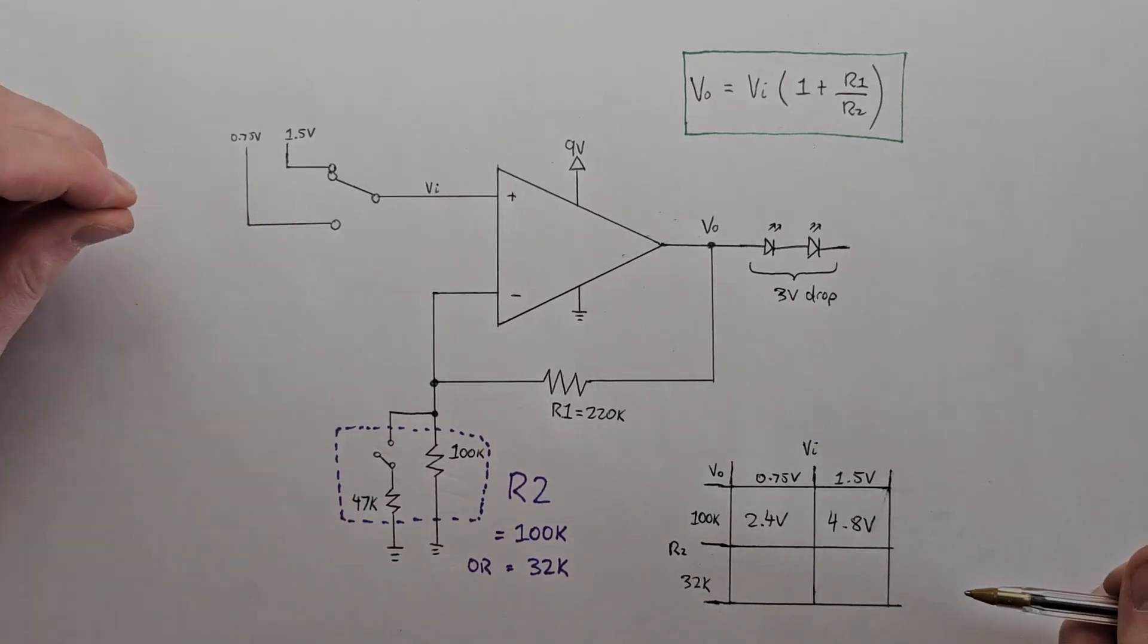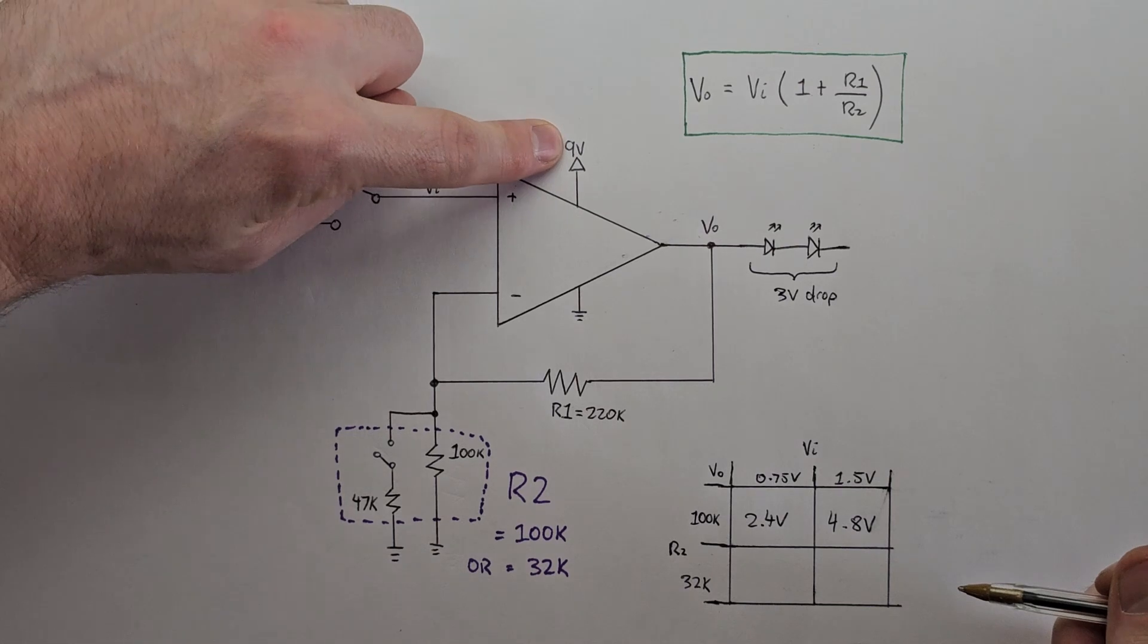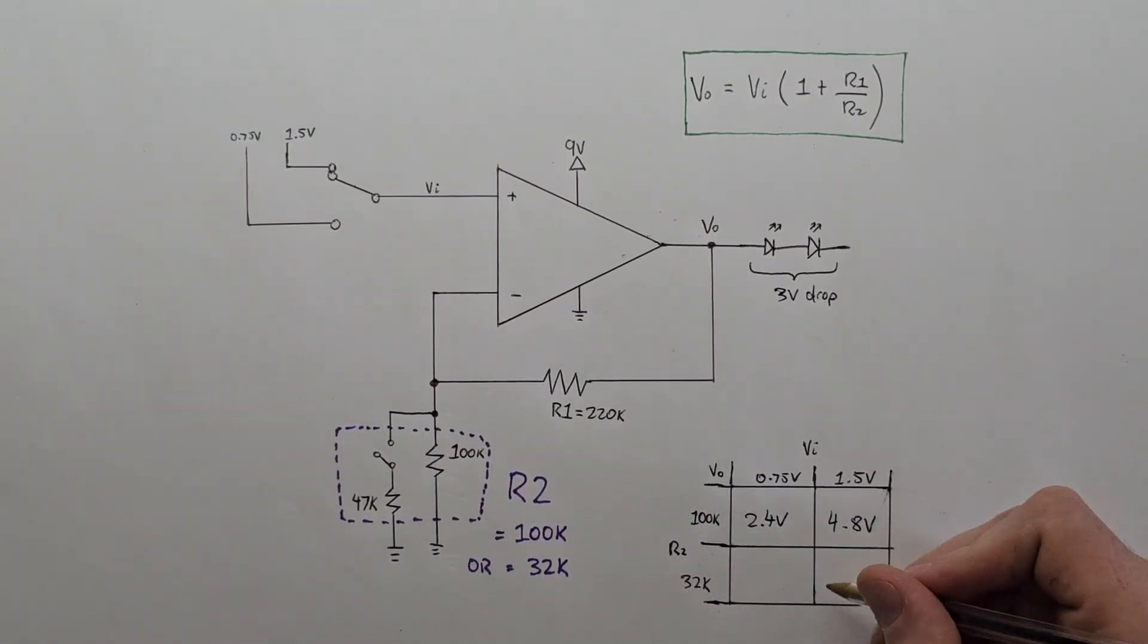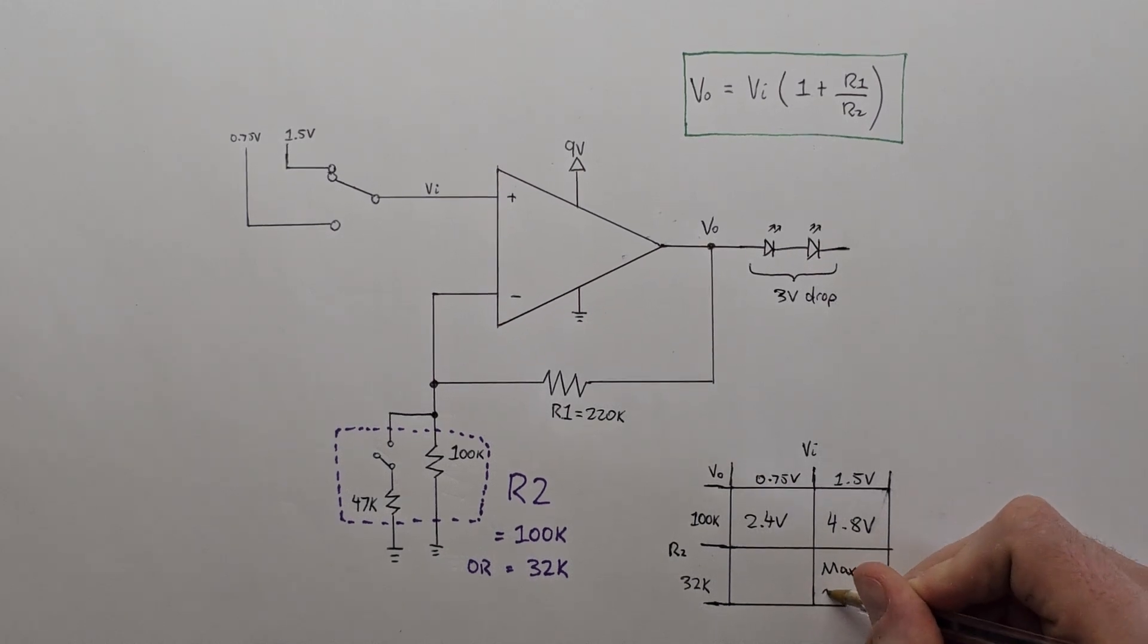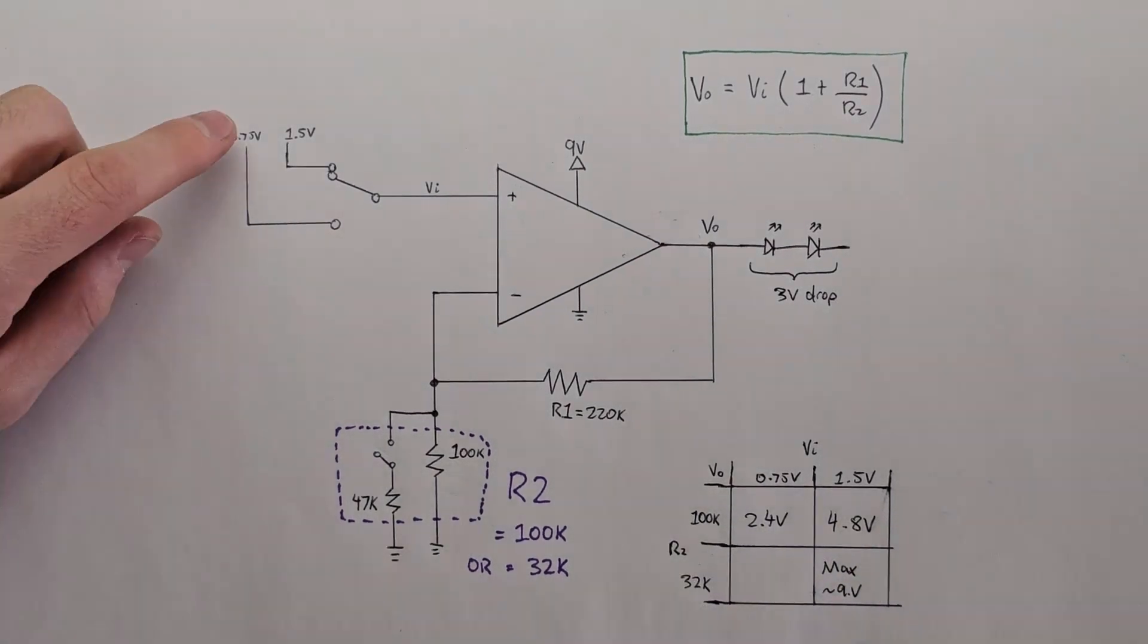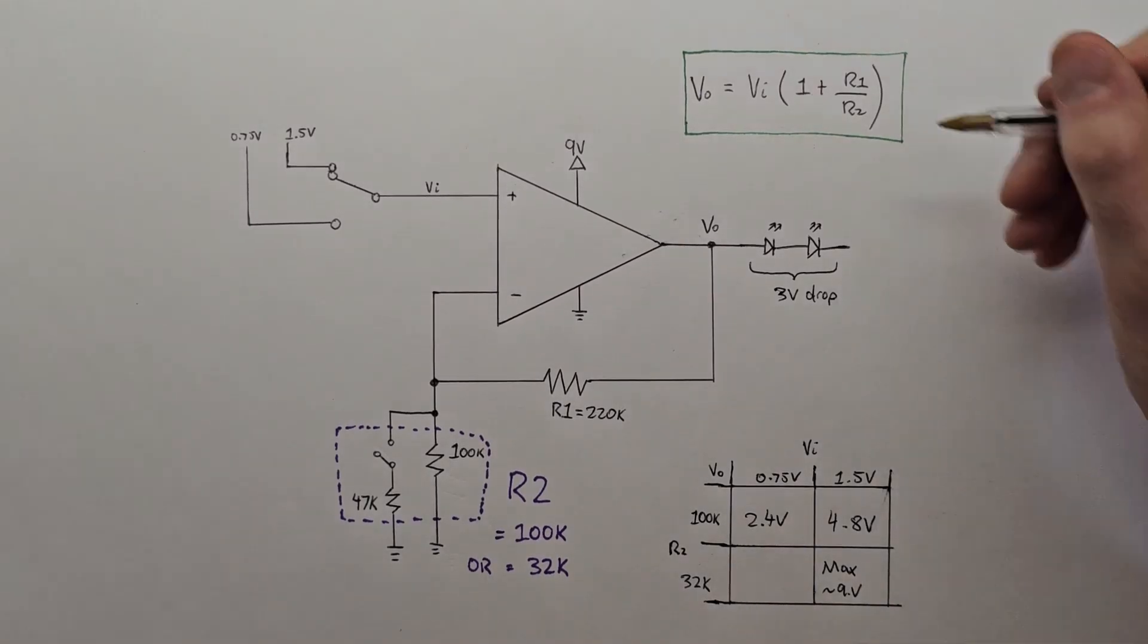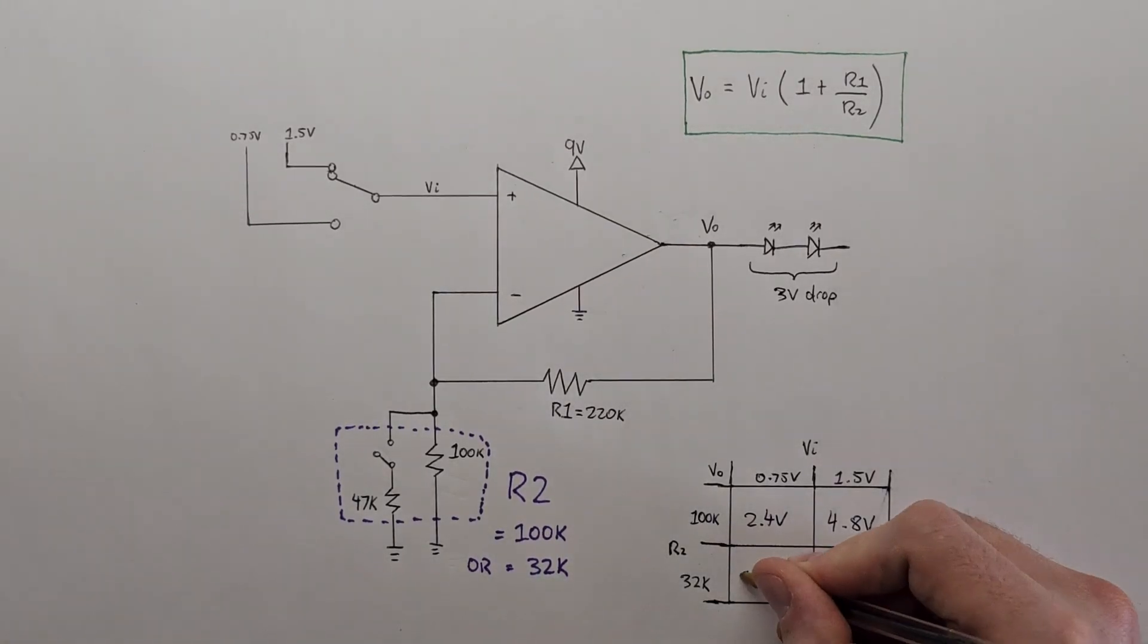So the output voltage will be maximum, which is approximately 9 volts. If we flick this switch and bring the input voltage to 0.75, but we keep this extra parallel resistor in the circuit, then we plug those into the equation and we get 5.9 volts on the output.